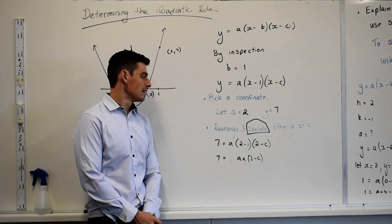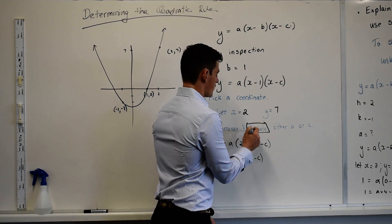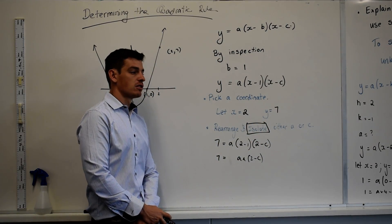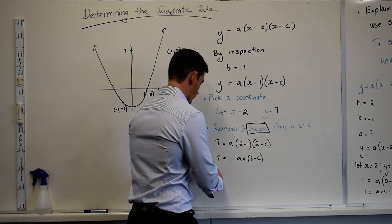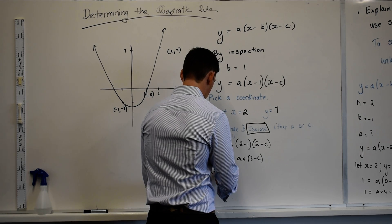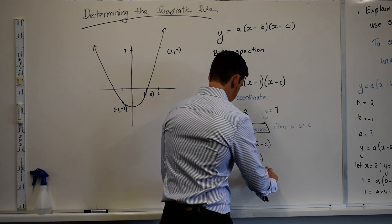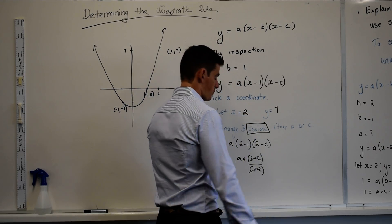Which variable is clearly the easiest to get by itself in this scenario? A. How would I get A by itself? Divide by 2 minus C, correct? Yeah. And A by itself.